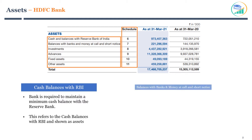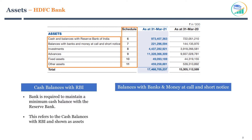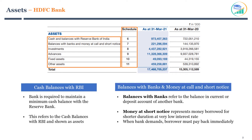The next line item is balances with banks and money at call and short notice. Balances with banks refer to the balance in a current or deposit account held with another bank. The bank can request this money when needed. Money at call and short notice represents money borrowed for a shorter duration at a very low interest rate — when the bank demands it, the borrower must pay back immediately. It helps the bank in generating interest and maintaining liquidity.